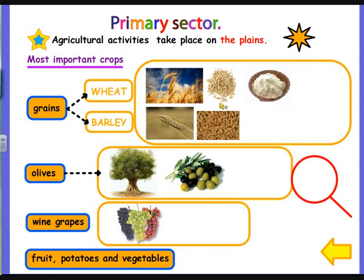As we saw in the map, Spain is also very rich in grains like wheat and barley. This is the plant of the wheat, this is the grain obtained from the plant, and this is the flour obtained from the grain.